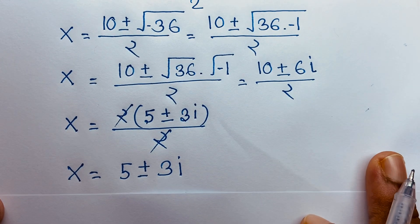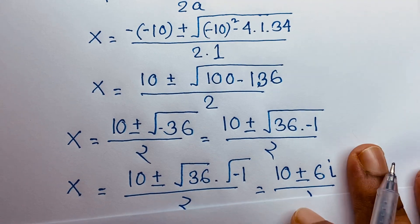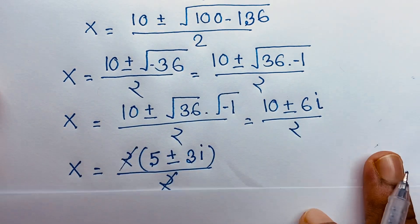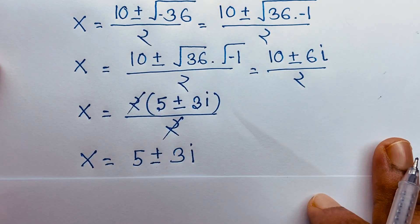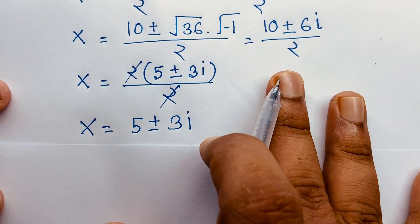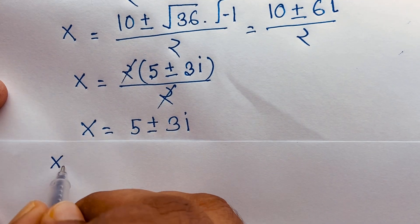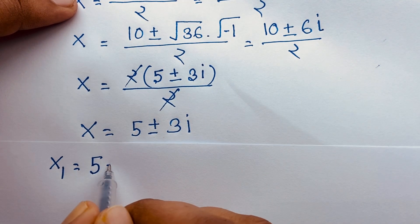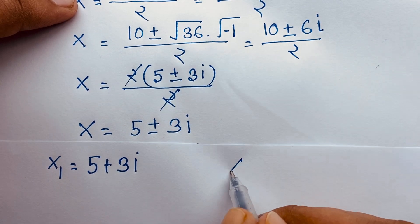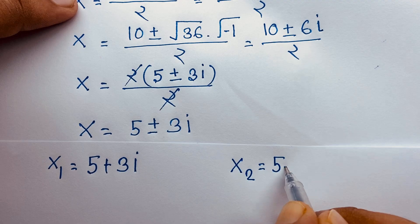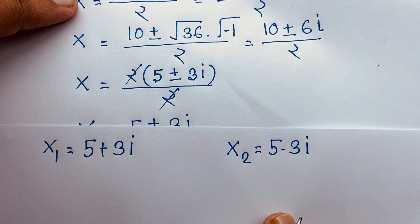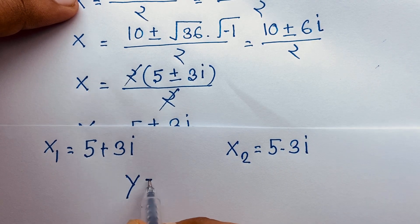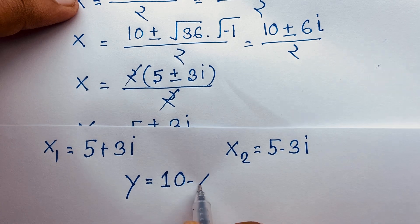Now we will find y. Remember our third equation: y is equal to 10 minus x. So x1 is equal to 5 plus 3i, and x2 is equal to 5 minus 3i. Using our third equation y equals 10 minus x, this is our third equation.